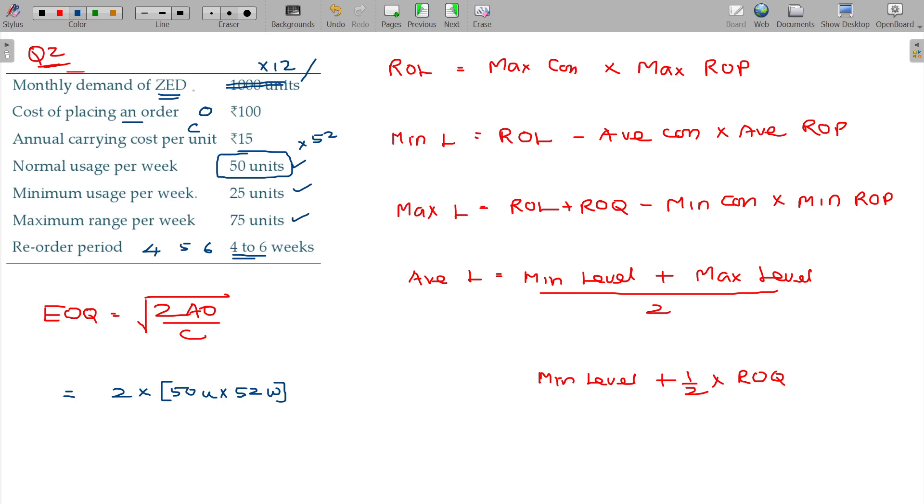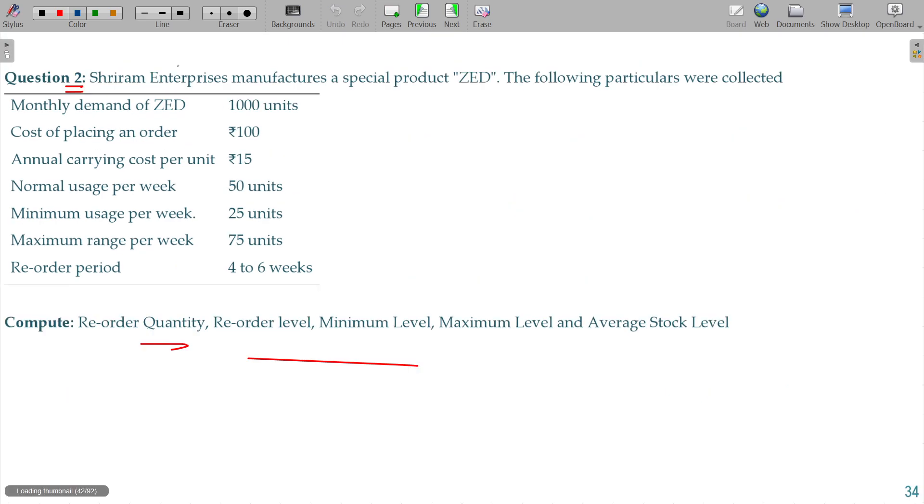Monthly demand is for Z which is the finished goods. Already told you, here we are going to consider all the calculations for the raw material, not for the finished goods. So this is Z manufactured. Monthly demand is for market demand. That is not a matter for me. This is production of raw material. Consumption is the average.